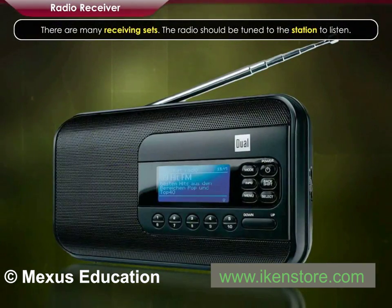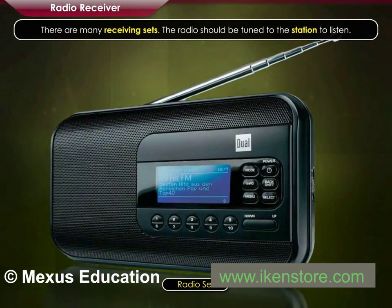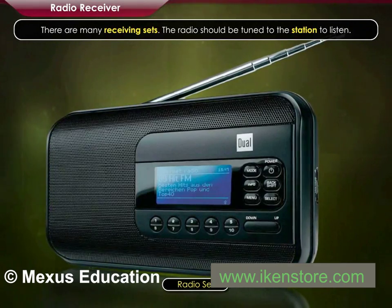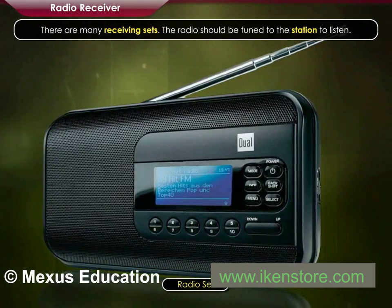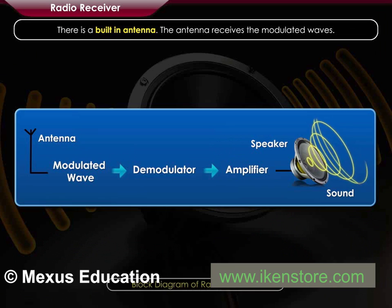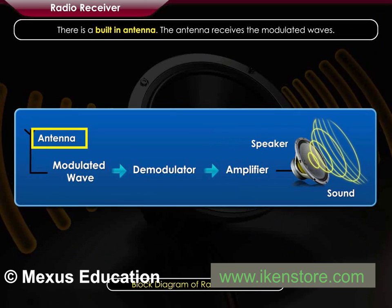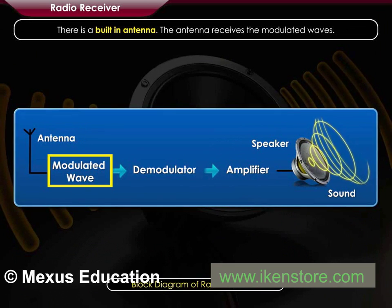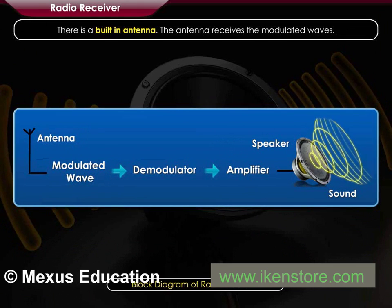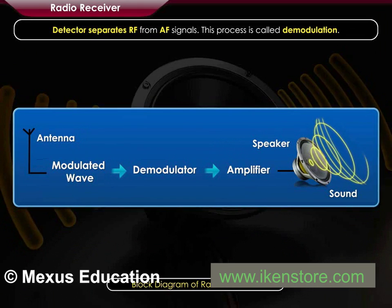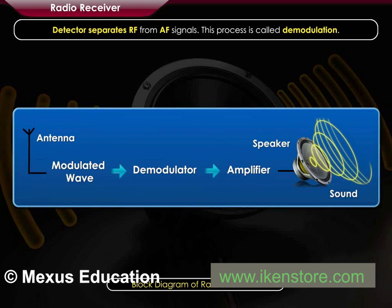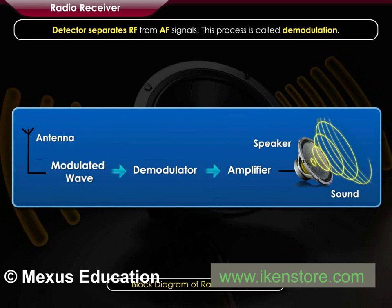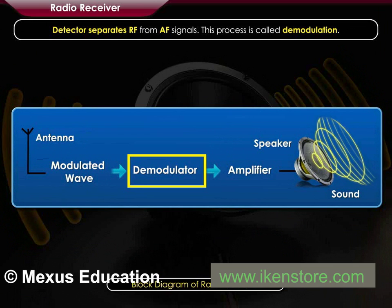There are many receiving sets. The radio should be tuned to the station to listen. There is a built-in antenna which receives the modulated waves. The detector separates RF from AF signals. This process is called demodulation.